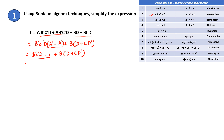Then this equals B'C'D as per the identity law, plus B times D plus CD'. Now there is a rule: X + X'Y = X + Y. So here X is D, X' is D', and Y is C. So this is equal to D plus C.